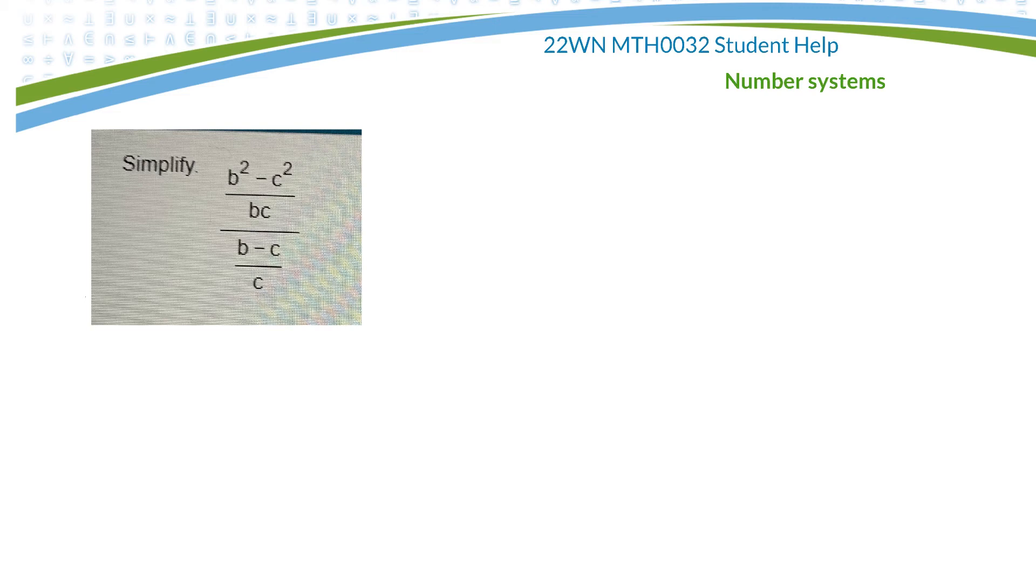All right, here's a complex rational expression, and I want to simplify it. So what I do is I find the lowest common denominator between bc and c. So that would just be bc.